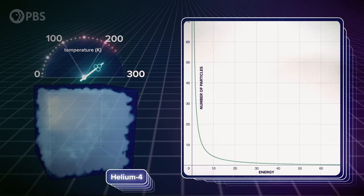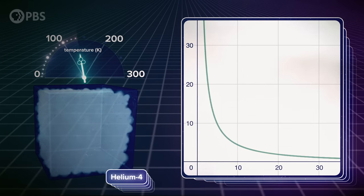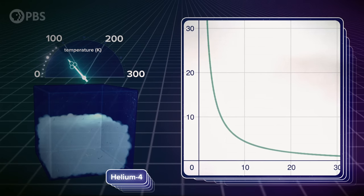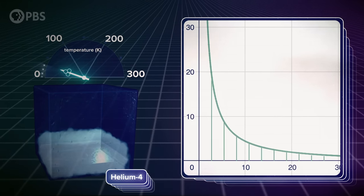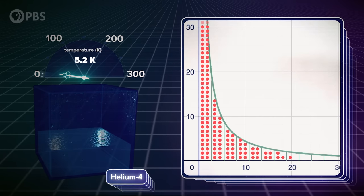But as temperature drops, more and more particles move to lower energies. At around 5.2 Kelvin, the gas condenses into a regular liquid. But as we cool things down further, things start to look different.